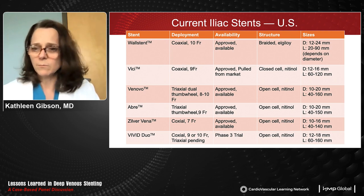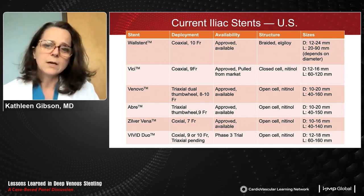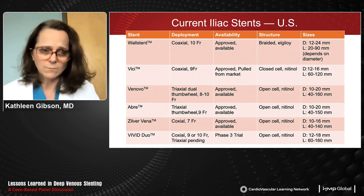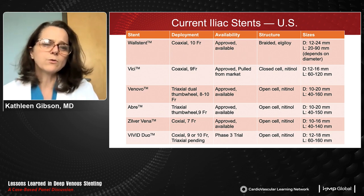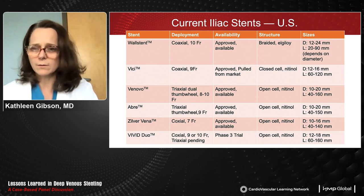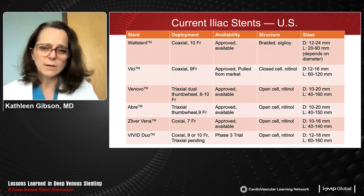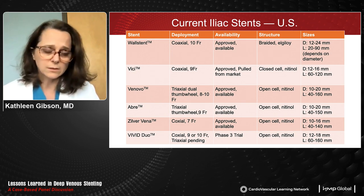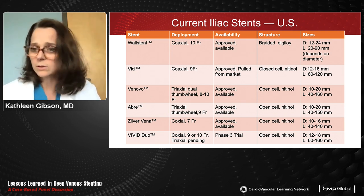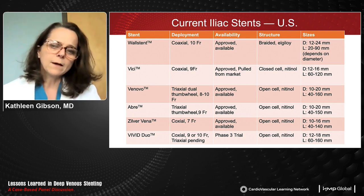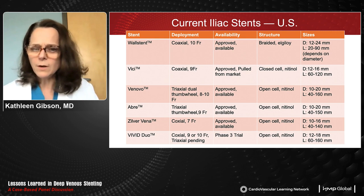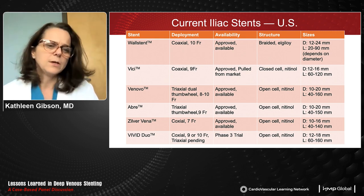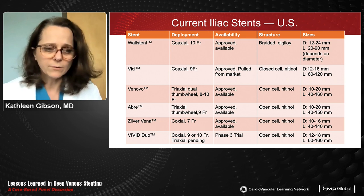The Vici, recently pulled from the market, was the only nitinol closed-cell stent being utilized, available in various diameters and lengths. The Venovo and Abre are both triaxial deployment — Venovo requires eight to ten French access depending on stent diameter, whereas the Abre is nine French. Both are open-cell nitinol stents with similar size ranges. The Zilvervena is coaxial, goes through a seven French sheath — the smallest — and is an open-cell nitinol stent with fewer upper-range sizes. The Vivid Duo is still in clinical trials.